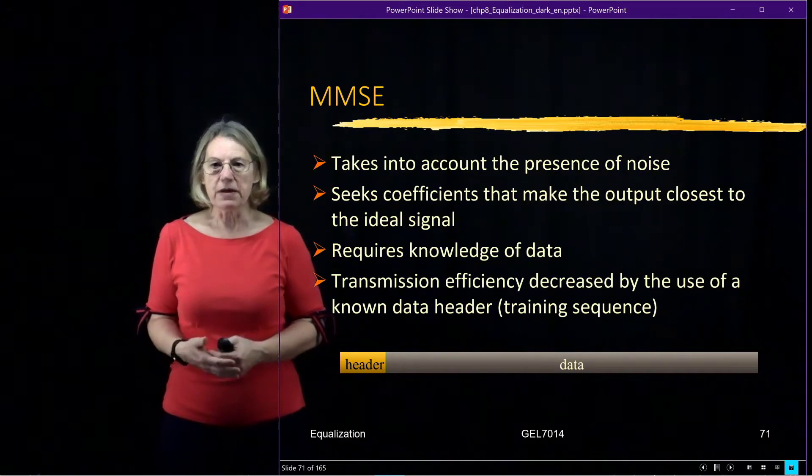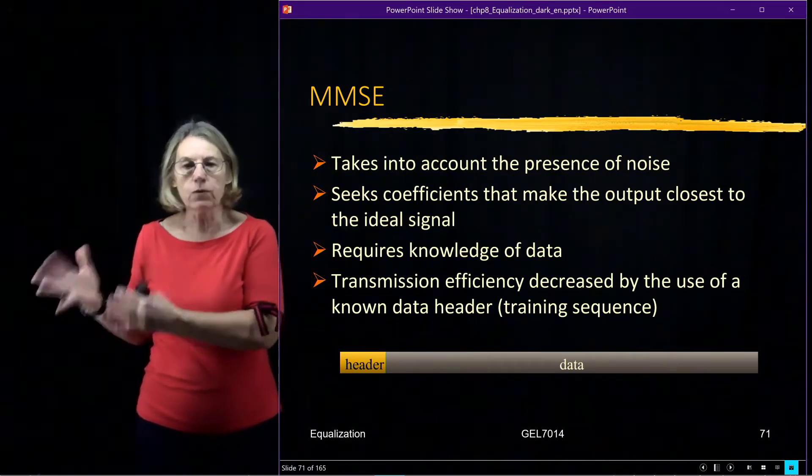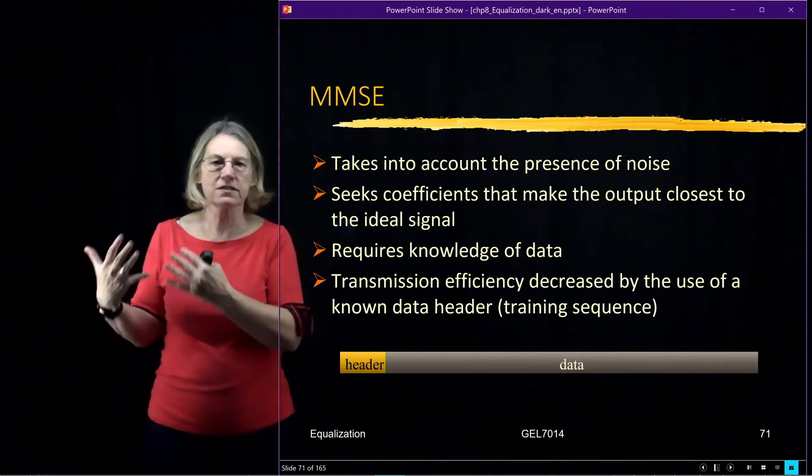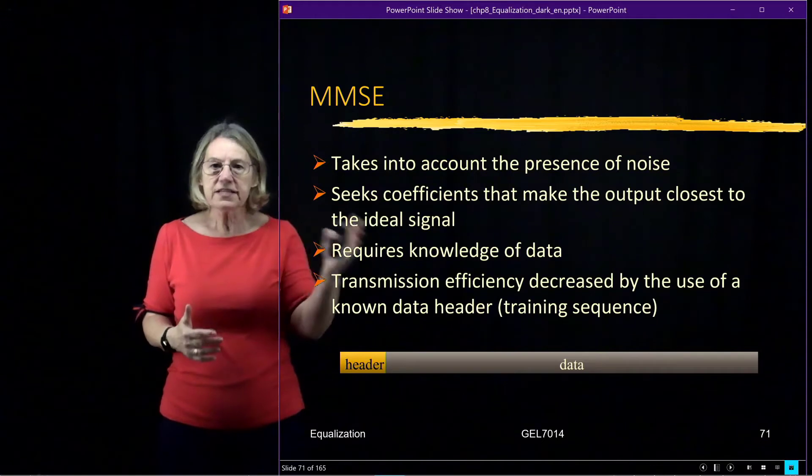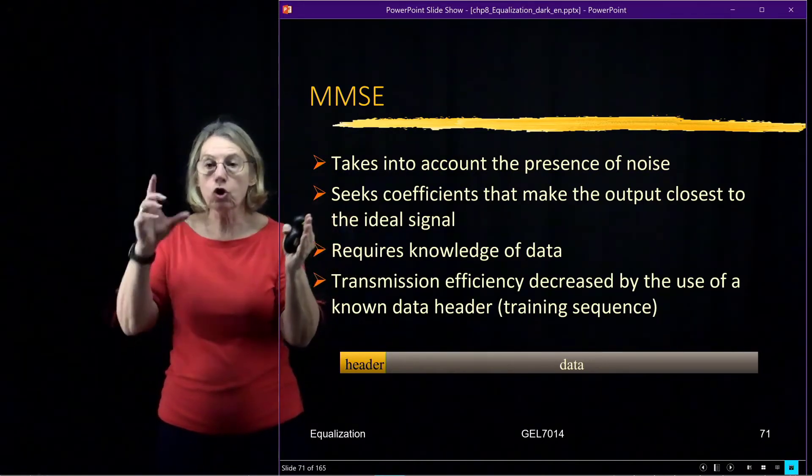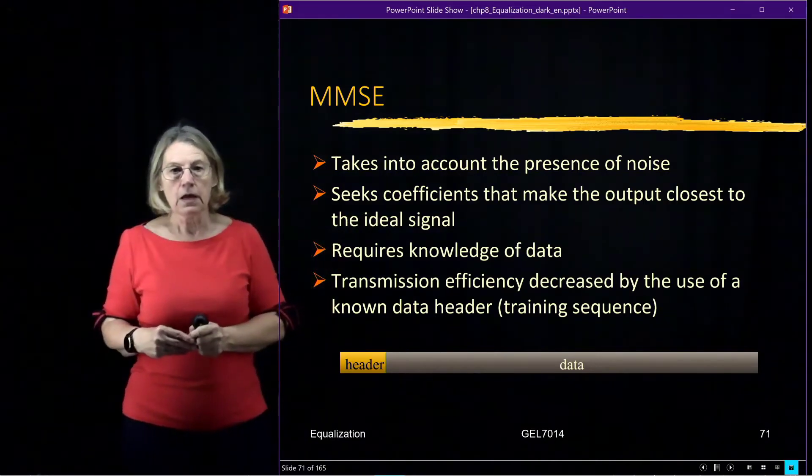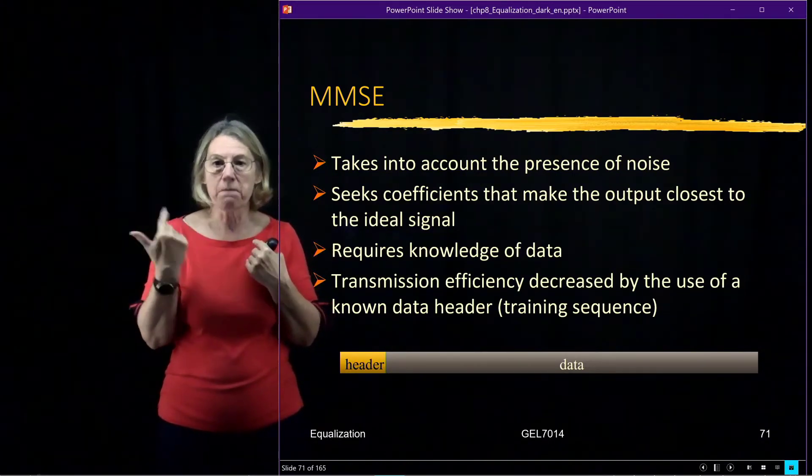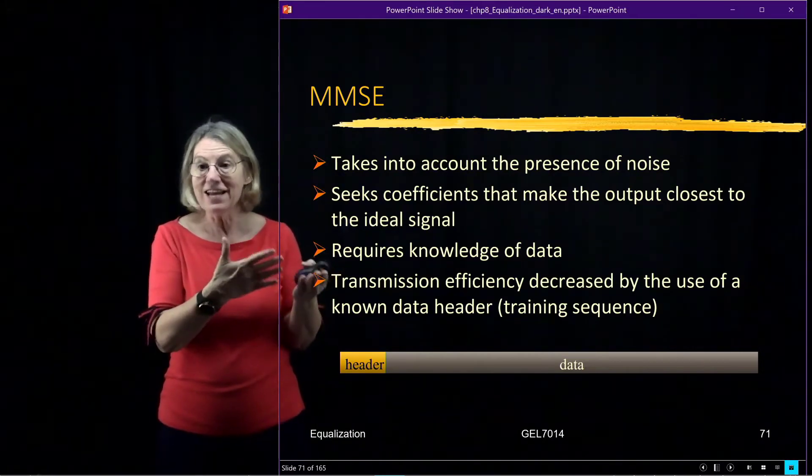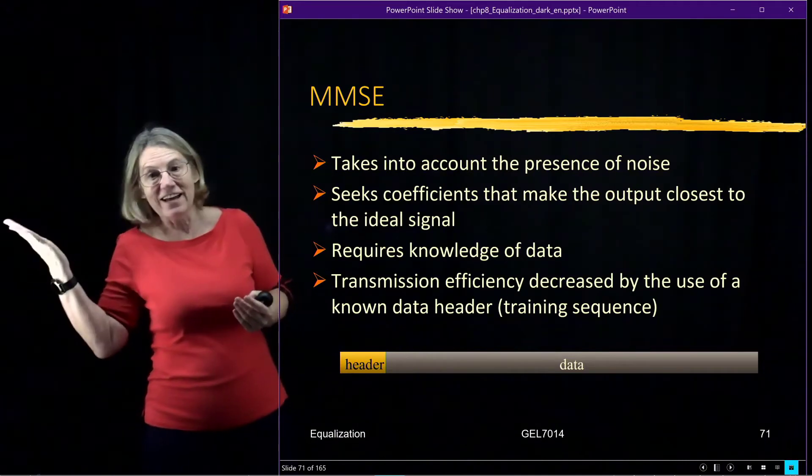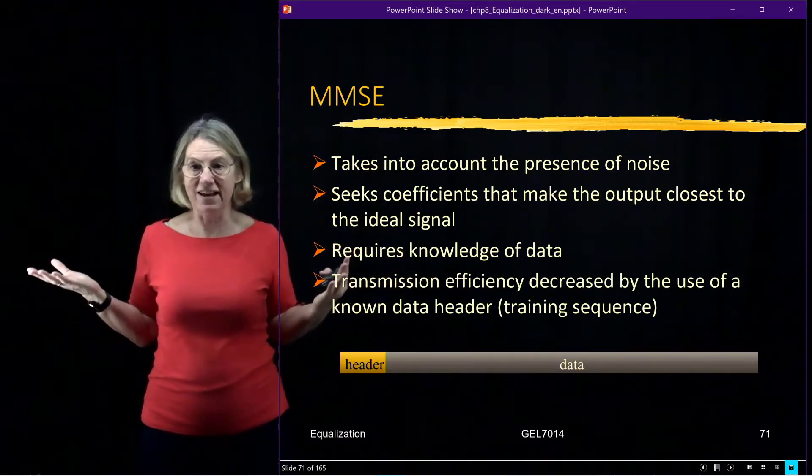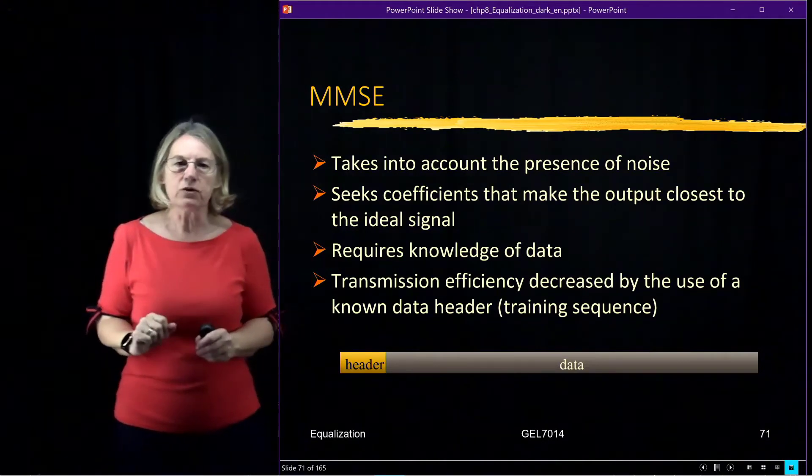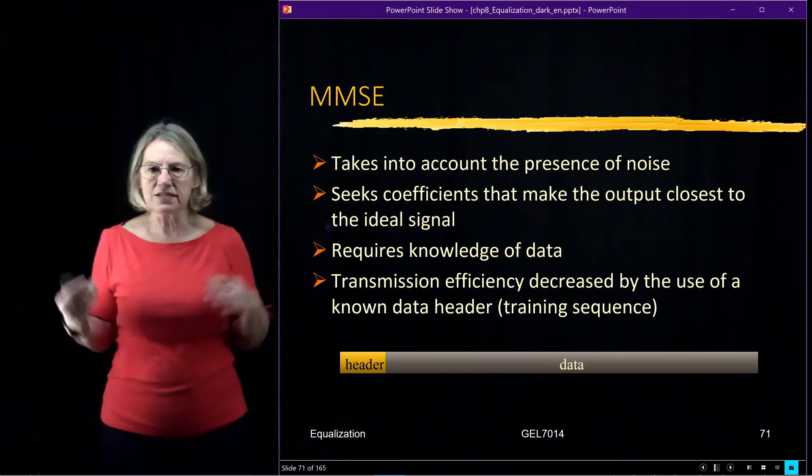So the idea of the MMSE is to take into account the presence of noise, which the zero-forcing equalizer completely ignores. It ignores the fact that noise is present and simply assumes that the impairment is ISI only, and it works for that. But in this case, instead, we're looking for the proximity. How close is the output of the filter to the ideal signal? Of course, if we want to know how close it is to the true signal, we have to know what is the true signal. This is a lot more demanding than knowing the channel. We also have to know the data.